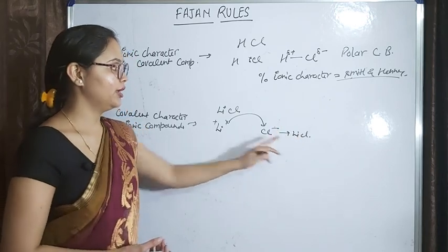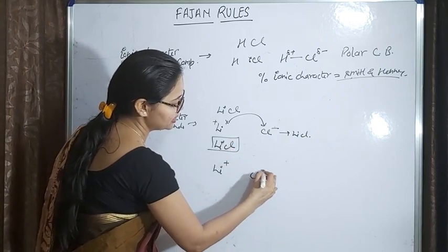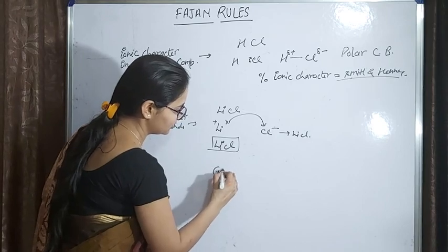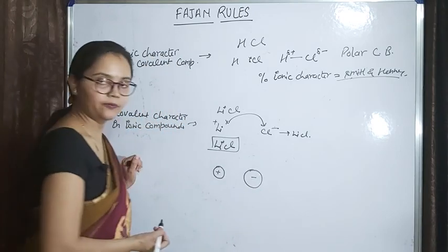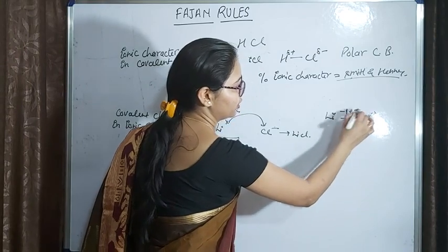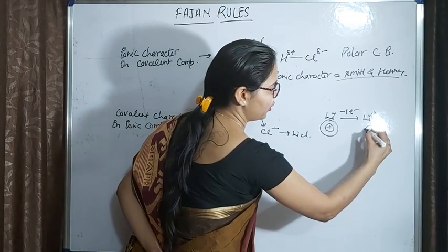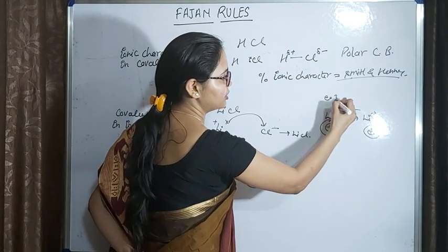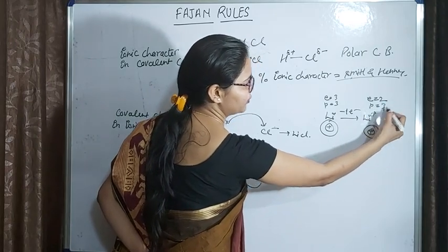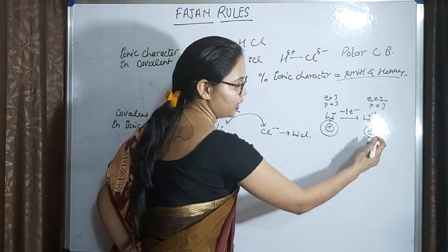In LiCl, Li is present as Li⁺ and Cl is present as Cl⁻. This is the cation and this is the anion. When Li converts into Li⁺, it has to lose one electron, and after losing one electron the size of Li decreases. In Li, electrons are three and protons are three, but in Li⁺ electrons are two and protons are three, so the effective nuclear charge per electron increases — that's why the size decreases.